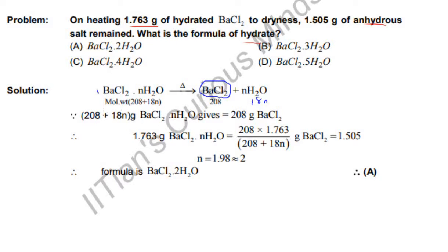Now, 208 plus 18n, this amount in grams of hydrated barium chloride gives 208 gram BaCl2.